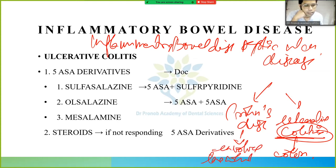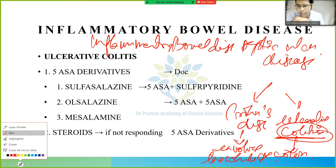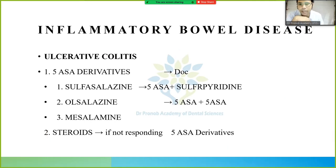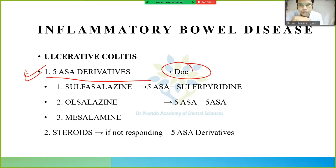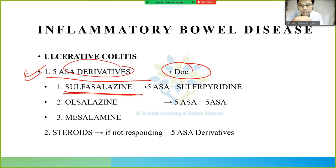We will talk about the treatment of ulcerative colitis. In ulcerative colitis, the first-line treatment given is 5-ASA derivatives — this is the drug of choice. The main drug in 5-ASA derivatives is sulfasalazine.